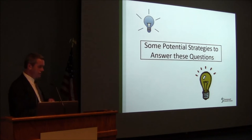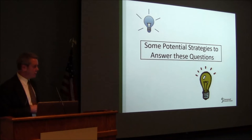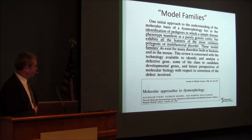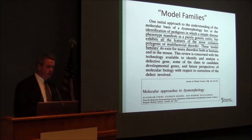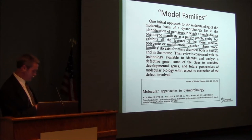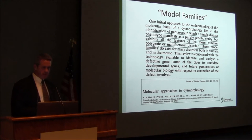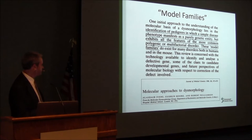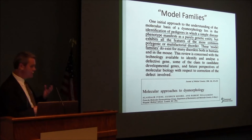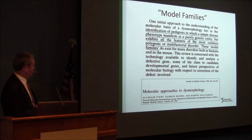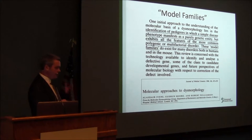There are ideas and strategies to address these questions. One is the idea of model families, from a paper from 1988 that was thinking about these questions before we had current technologies — but the same principle still holds. If you can find pedigrees where you have a very straightforward phenotype that looks purely genetic and Mendelian, and looks like the more common polygenic or multifactorial disorder, then that would be a model family. So finding families with isolated major malformations segregating in a Mendelian fashion would be good candidates to study.